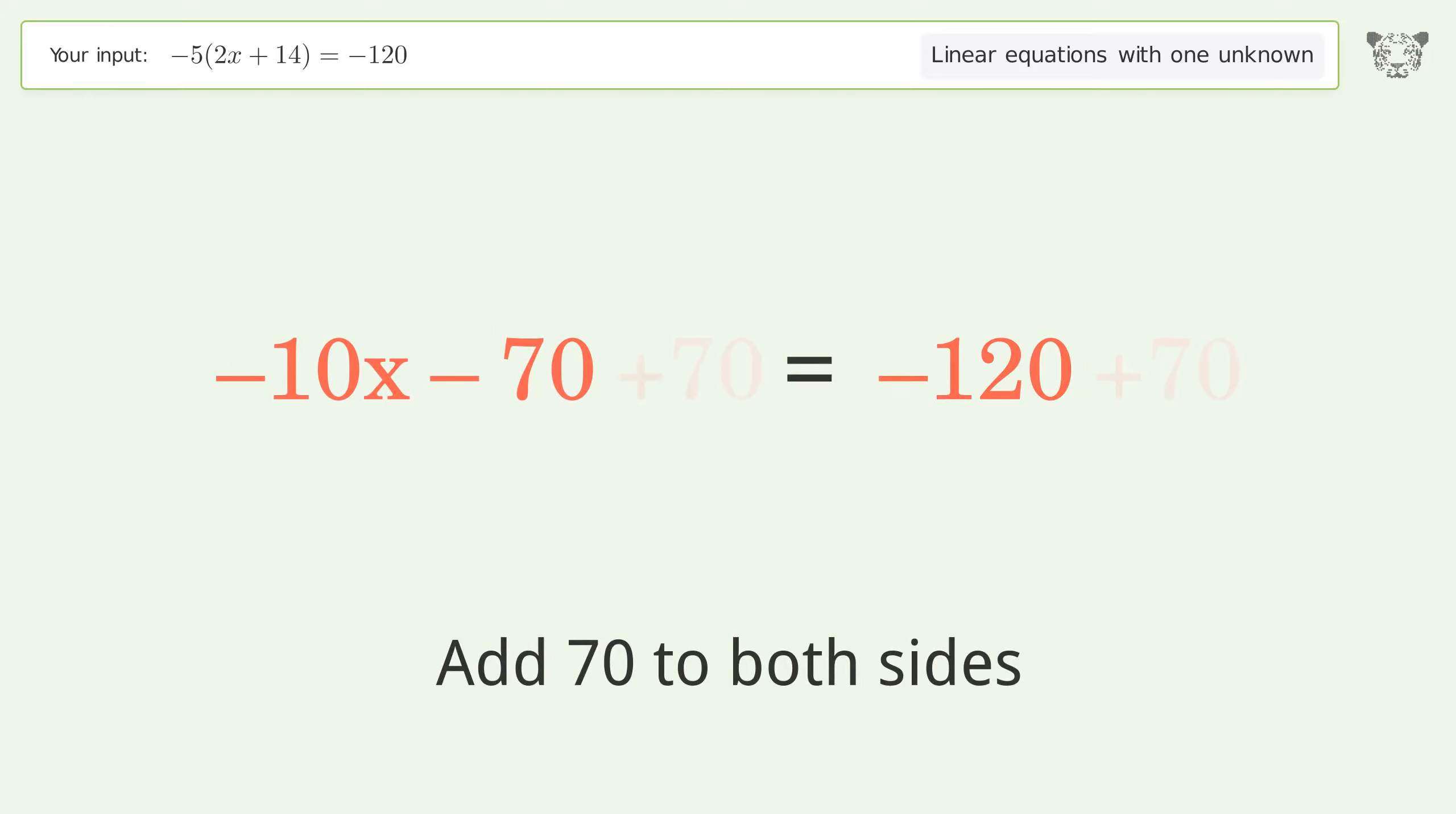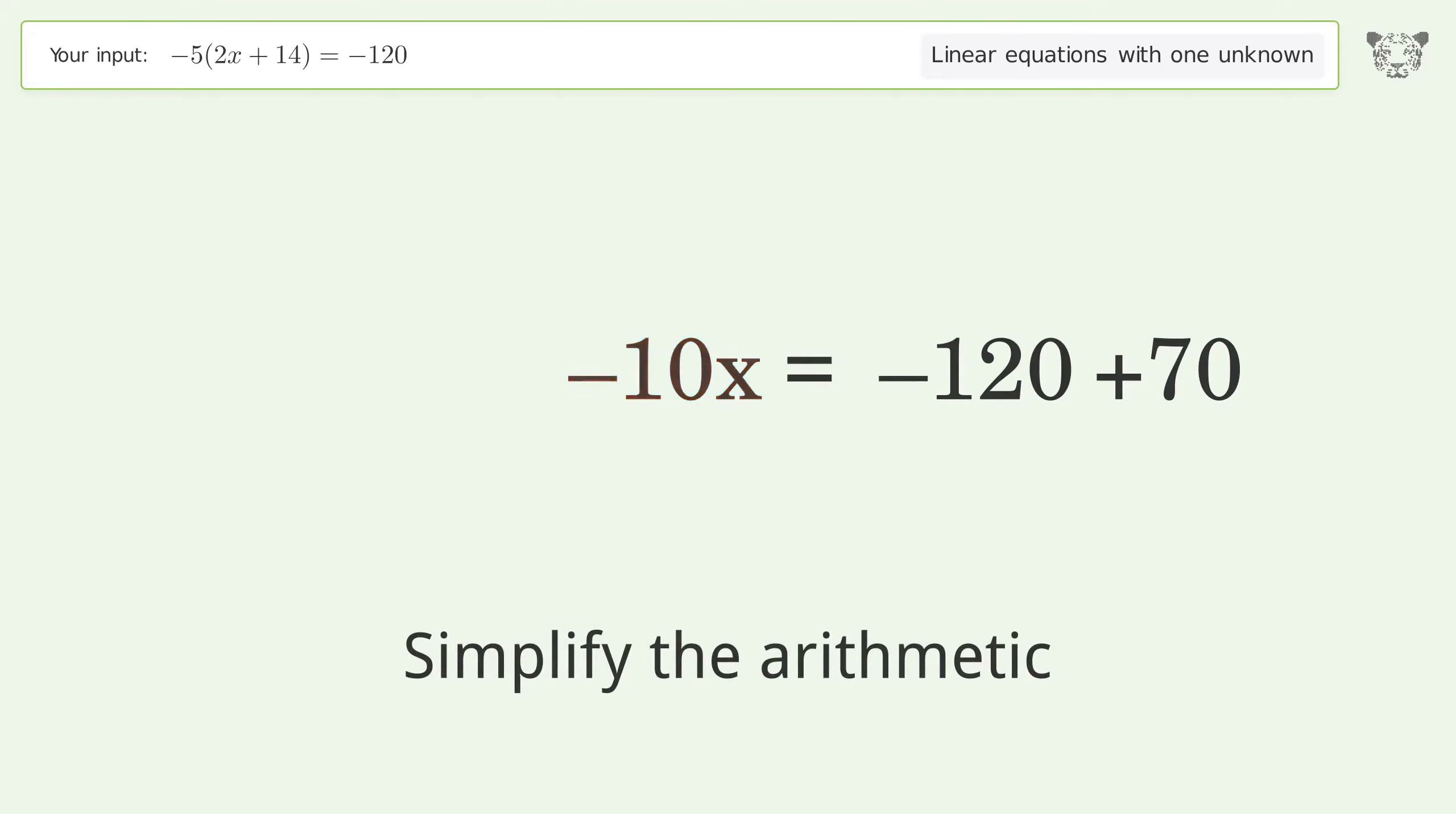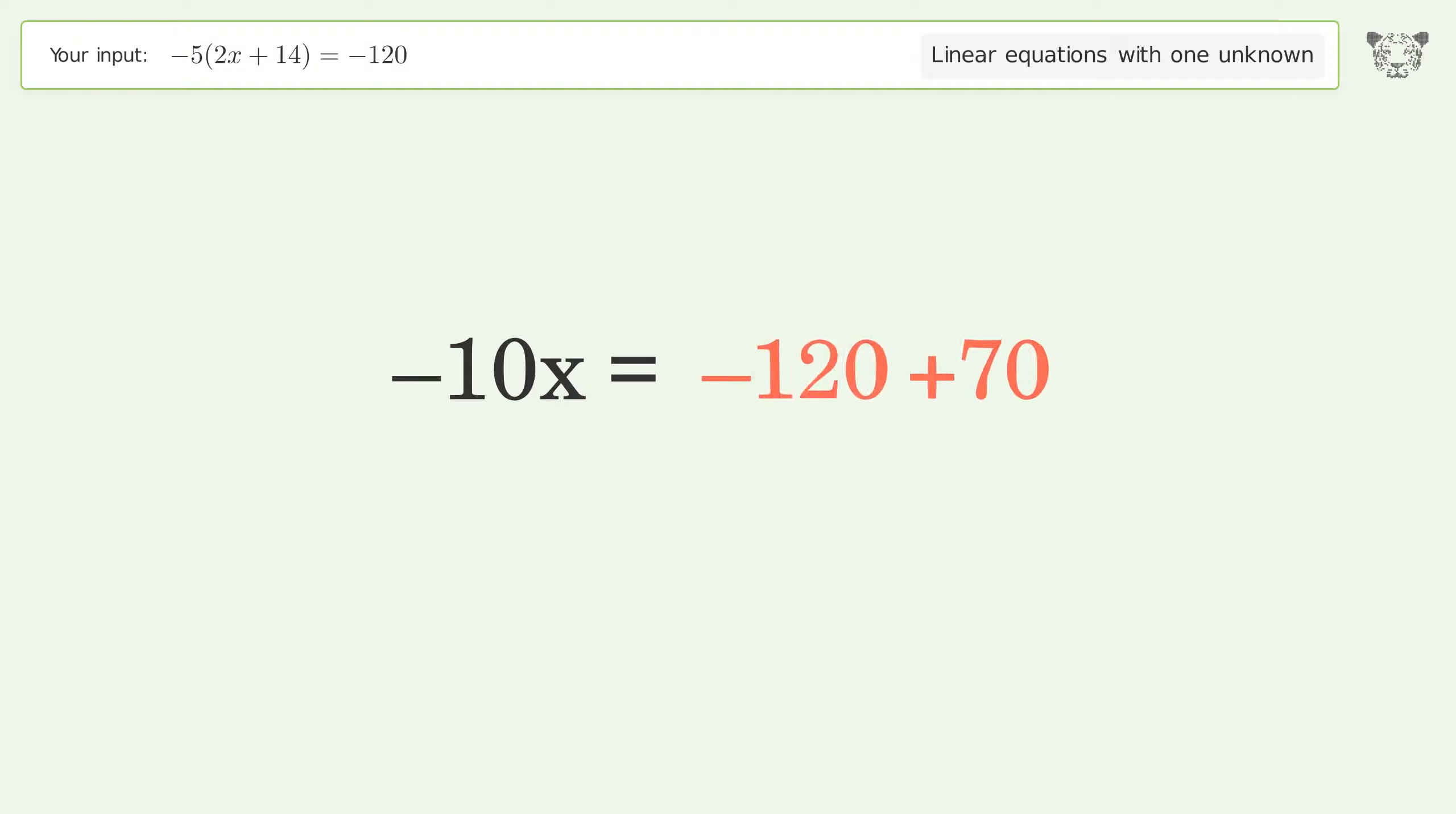Group all constants on the right side of the equation. Add 70 to both sides. Simplify the arithmetic.